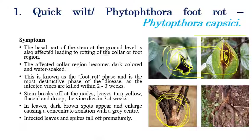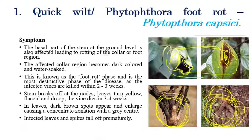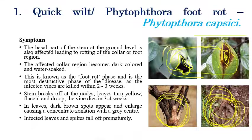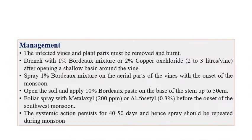The collar region turns dark or black in color, and water-soaked glistening can be seen. The basal parts show yellowing and defoliation in later stages. This disease can kill vines within two to three weeks or three to four weeks after transplanting or sowing.